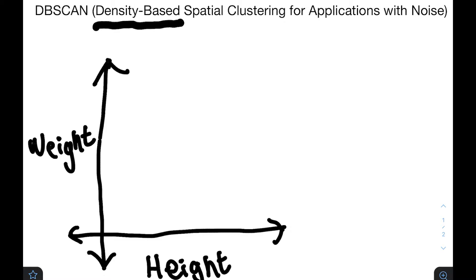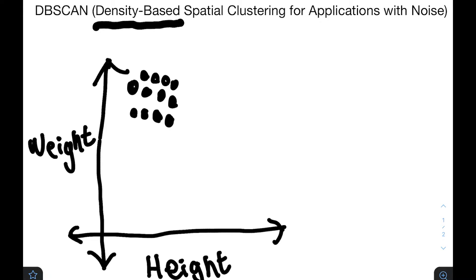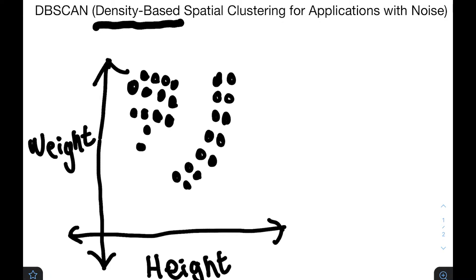Drawing it in two dimensions, we should have something like this. We have different points, each with their heights and weights. Maybe we have a bunch of people over here — that would probably be considered a cluster. If we have another scoop over here, curving around like this, and maybe some other weird points that didn't fit quite as well, just to make it a little more realistic.